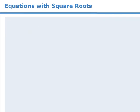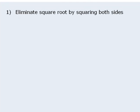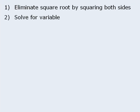So as you can see, we can solve equations involving square roots by first squaring both sides to eliminate the square root, then solving the resulting equation, and finally being sure to check for extraneous roots by plugging any solutions into the original equation.